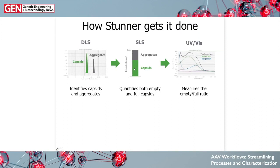What Stunner does step by step: first, DLS identifies the capsids, the aggregates, and how intense the signal is from each population — say the area under the curve in green is 70% of the total. That info then helps split up your SLS intensity signal from a total value into the amount attributable just from your capsids — 70% of the total area. Finally, UV-Vis brings in info about empty/full ratio and total amounts of protein and DNA in mg/mL or ng/μL, which are then combined automatically to get you an accurate capsid titer.